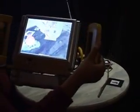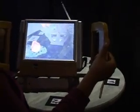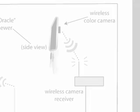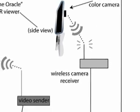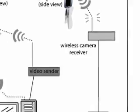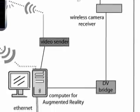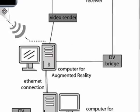A viewer comprised of a wireless camera, LCD TV, and power pack is used for video capture and display. A wireless camera sends video to an analog receiver, and the video signal is passed along to another computer running DART.